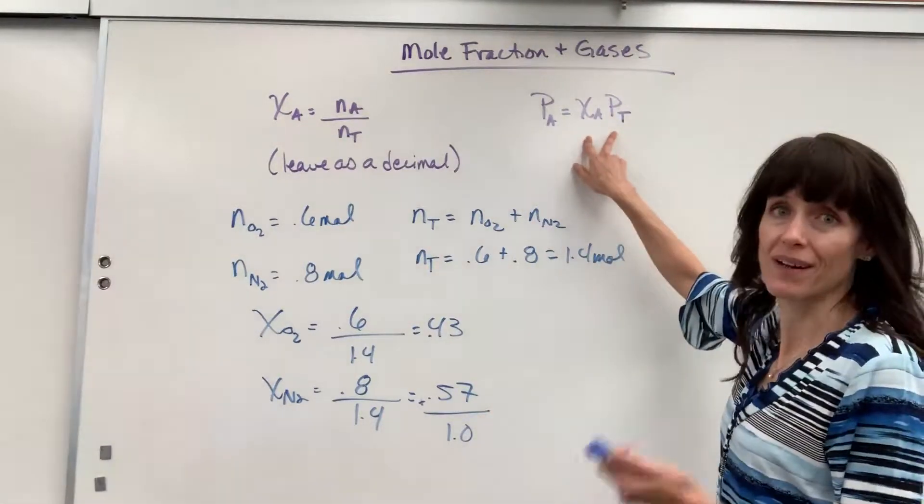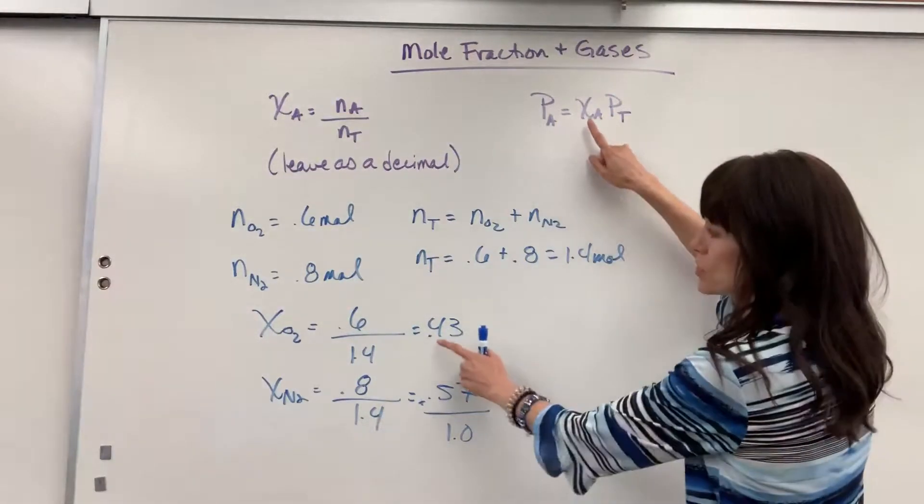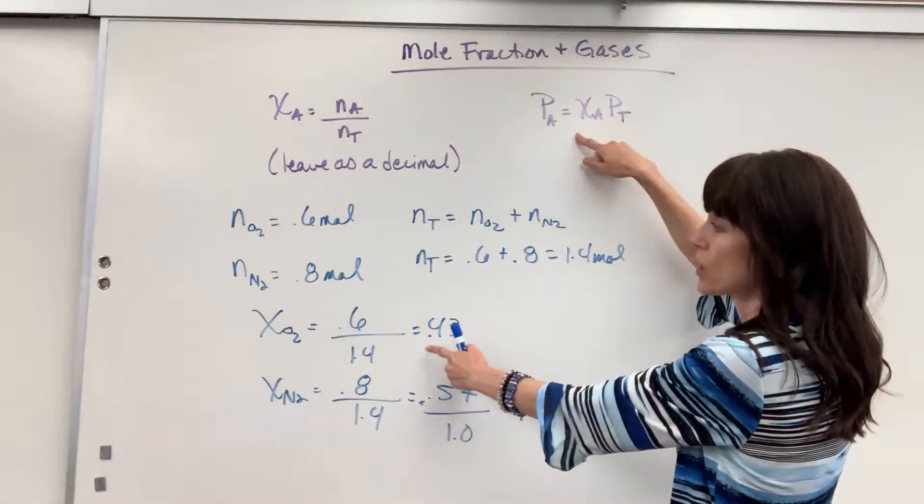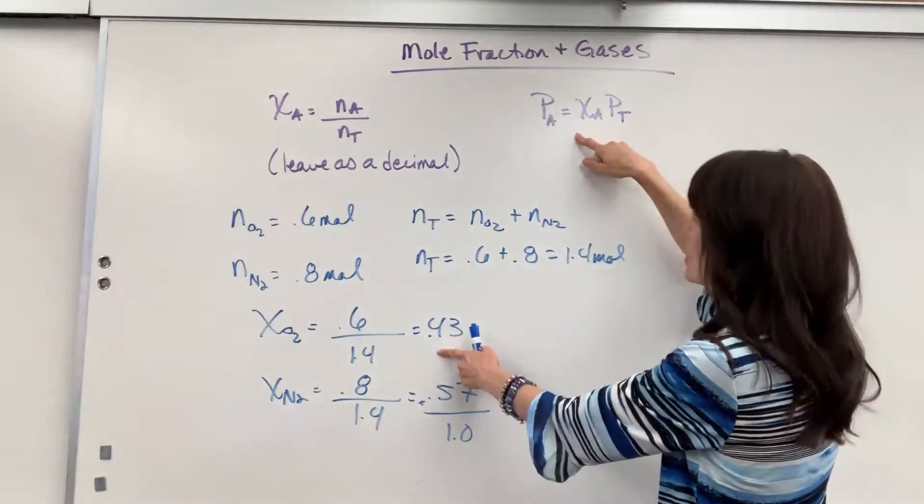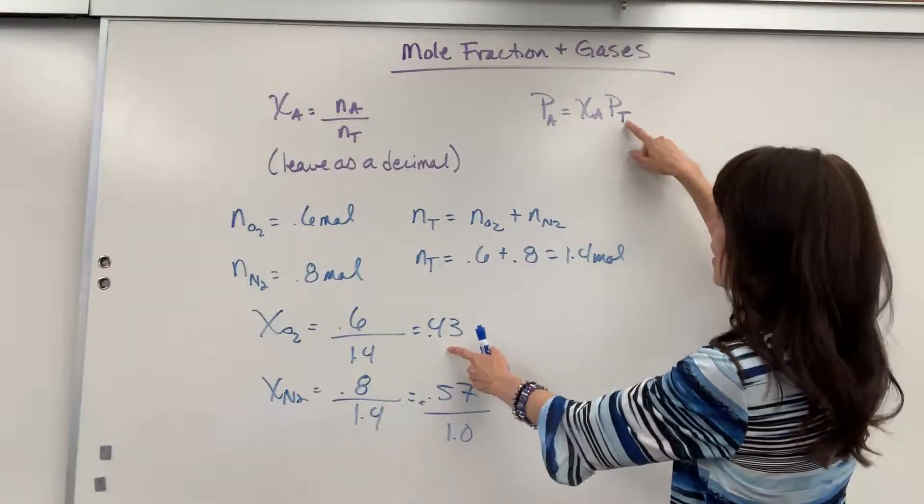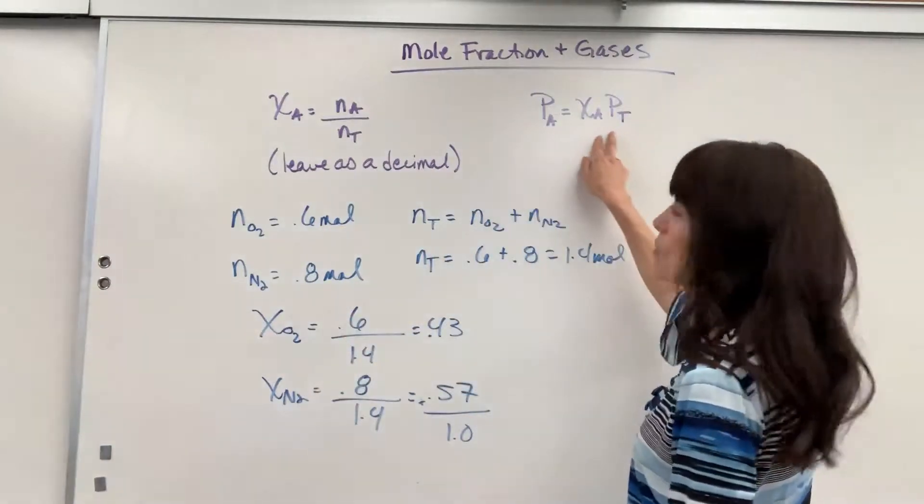I come up here. Guess what? All you have to do is multiply. Mole fraction, so 43% of all of the moles are the oxygen. It means that 43% of all the total pressure comes from the oxygen. That's why you can multiply those.